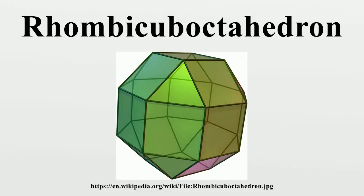In geometry, the rhombic arboctahedron, or small rhombic arboctahedron, is an Archimedean solid with eight triangular and 18 square faces. There are 24 identical vertices, with one triangle and three squares meeting at each.